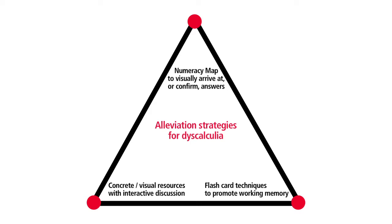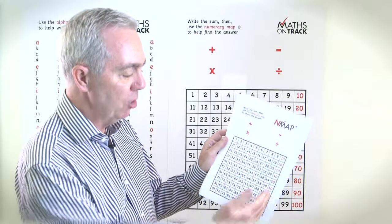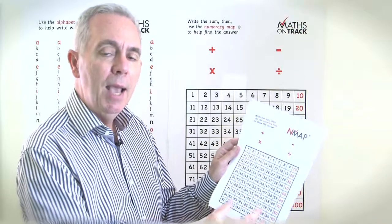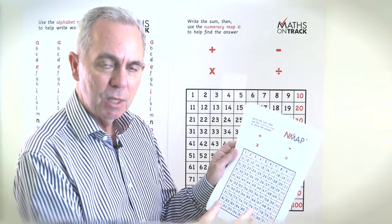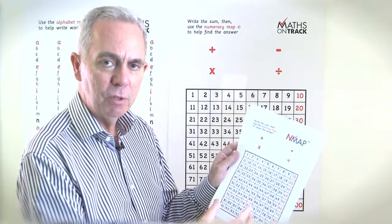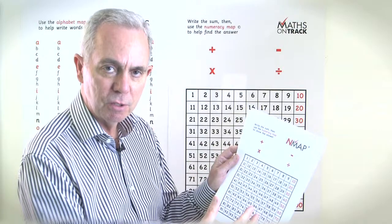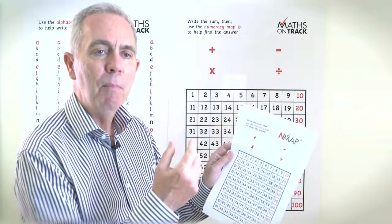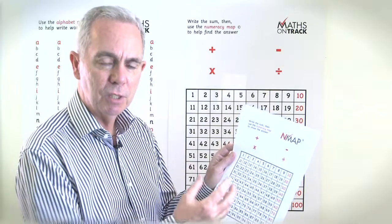The numeracy map being the simple grid of numbers from 1 to 10 down to 100 and the mapping techniques that really benefited the dyscalculia children to arrive at answers for addition, subtraction, multiplication and division sums.